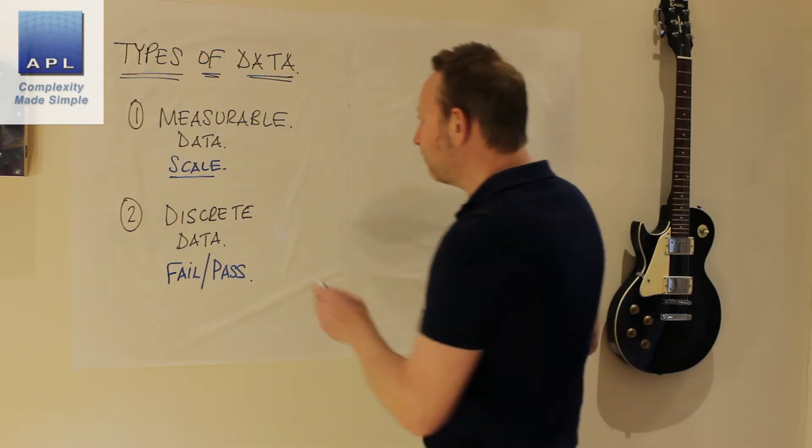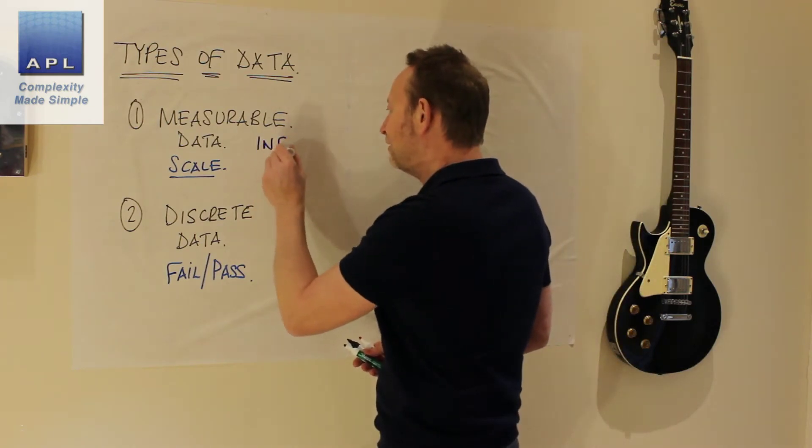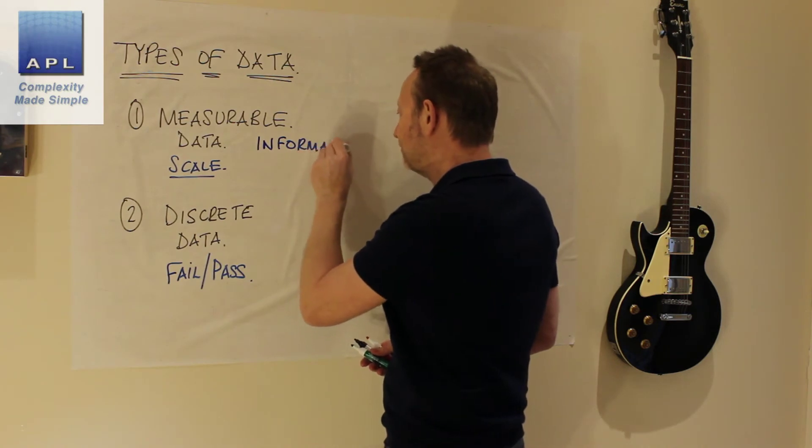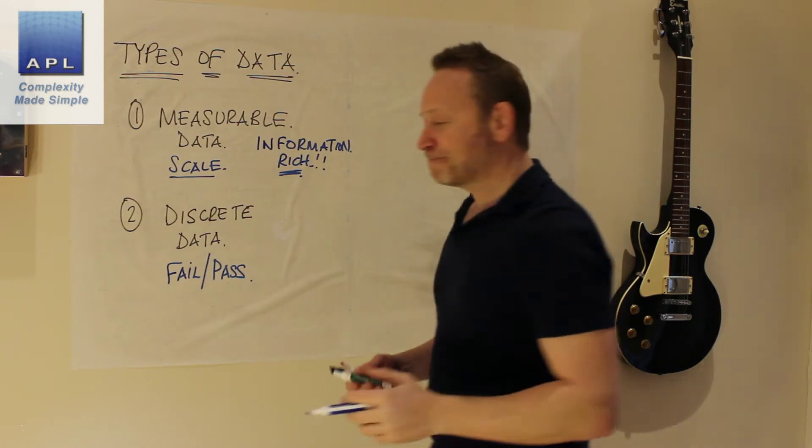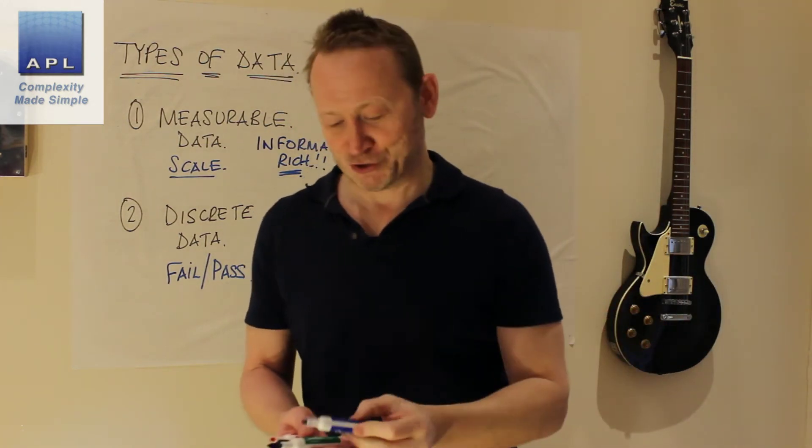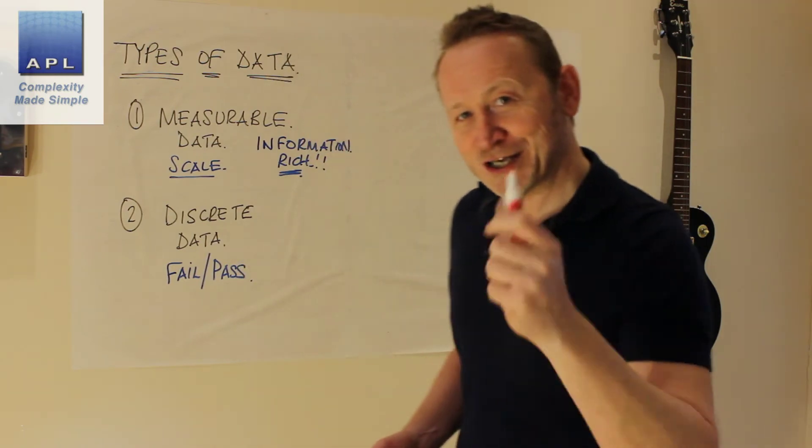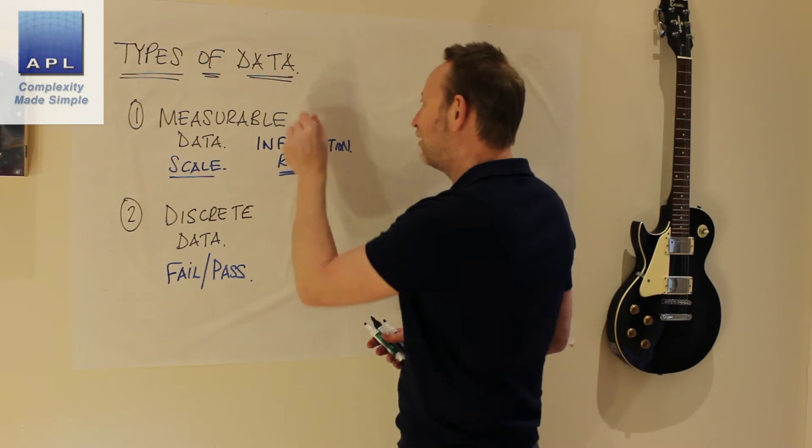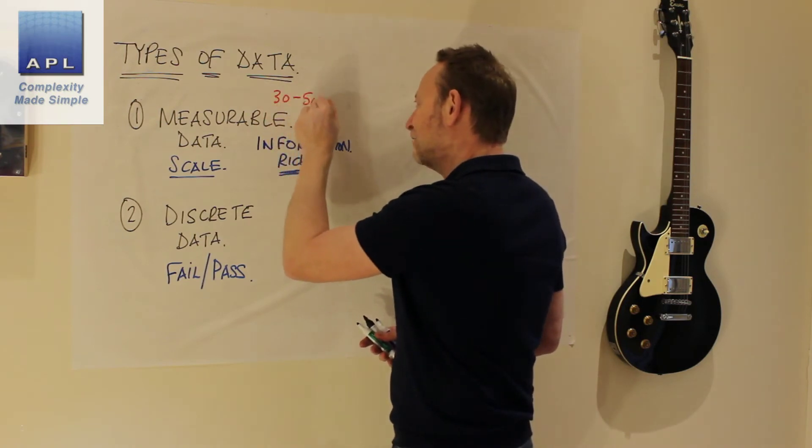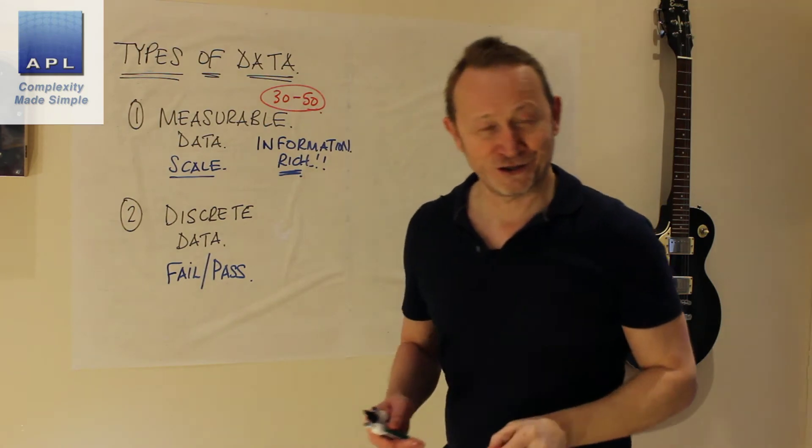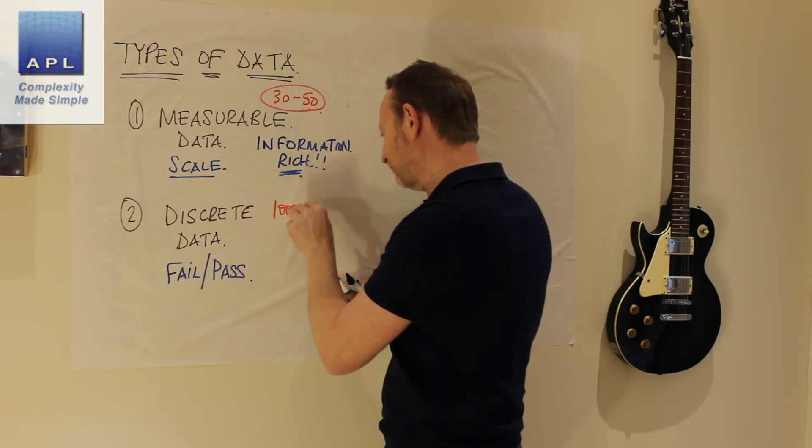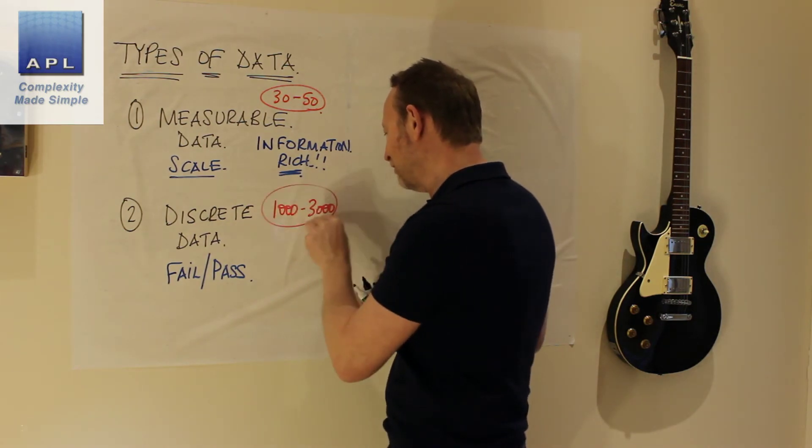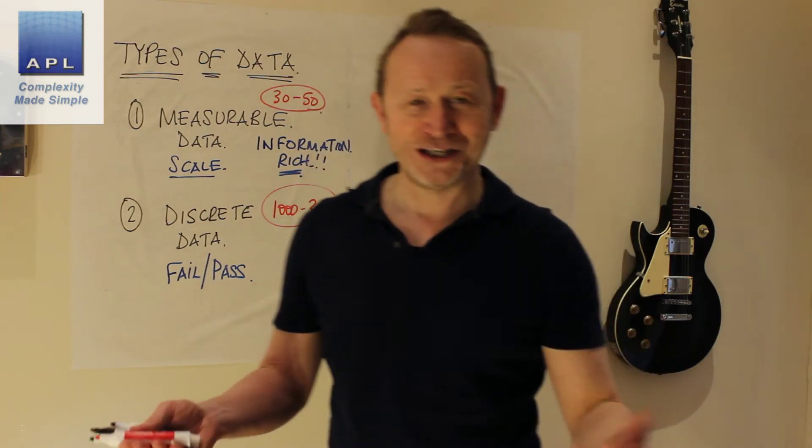Well, they talk about measurable data being information rich. Because it's information rich, the amount of data points you need is so much smaller. If you worked out a statistical sample size for this type of data, typically you'd only want you to go and get 30 to 50. If you work out a statistical sample size for this type of data, wow, look at the difference. 1,000 to 3,000.